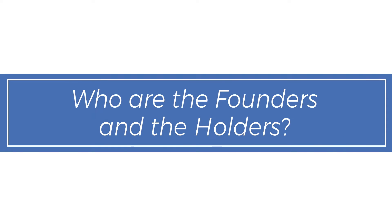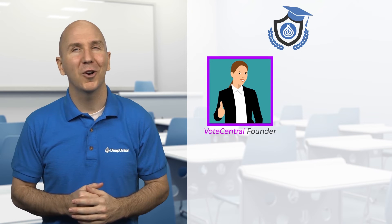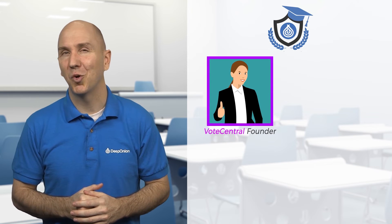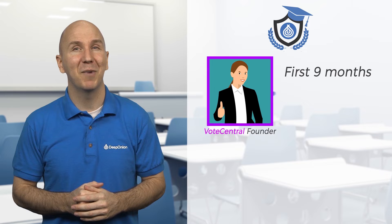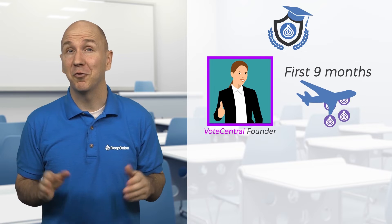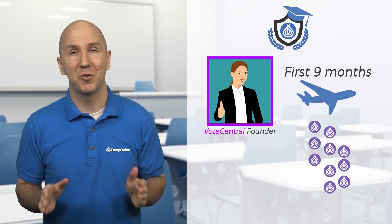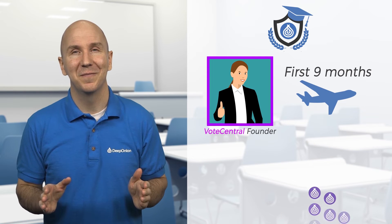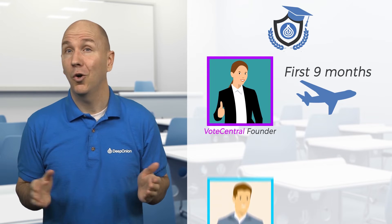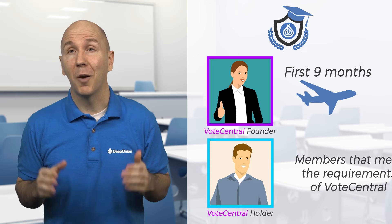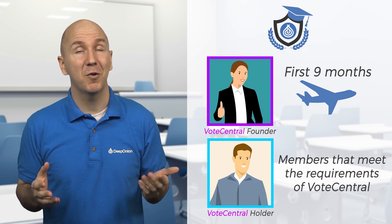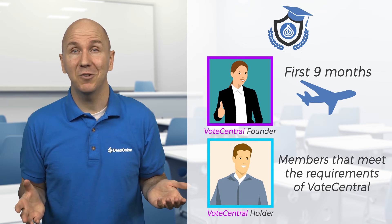Who are the founders and the holders? Founders are the hard-working people that supported Deep Onion in the first nine months during the free airdrop distribution phase. Holders are members that meet the requirements of Vote Central.